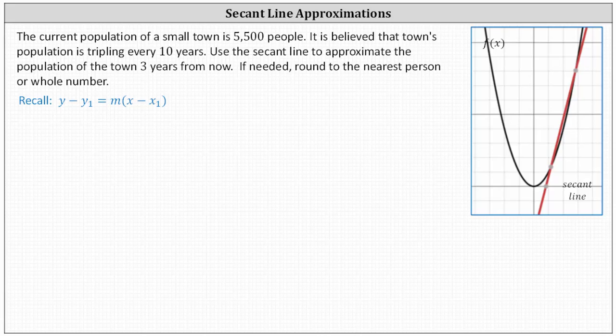In this problem, we're using a secant line to approximate a population because we don't have the population function. The idea is that a secant line can be used to estimate function values as long as we're near the two points on the function and the secant line or in between those two points. Looking at the graph on the right, we have a function f of x graphed in black and we have a red secant line that intersects the function in two points. Notice as long as we're between the two points on the secant line and on the function or near those two points, the secant line approximations are good approximations for the true function values.